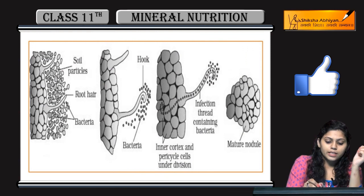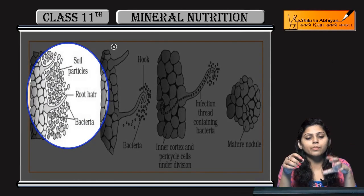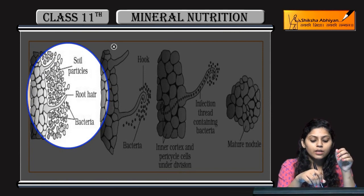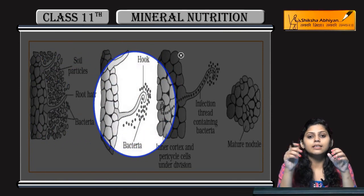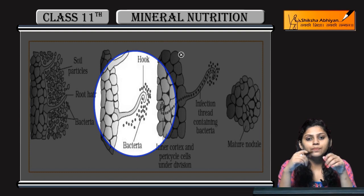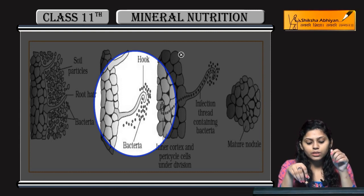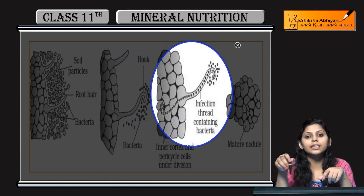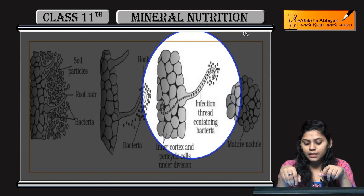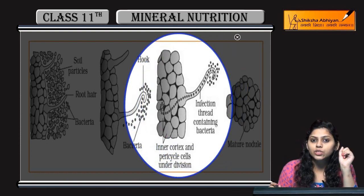You can see — soil particles है, उसमें bacteria है जिसने surround किया है root को. Curl हो गई है root और hook type structure बनाया है roots ने. Bacteria अभी भी उसके आसपास ही है. Infection thread बनी है, जो रीच करती है inner cortex and pericycle under cell division.